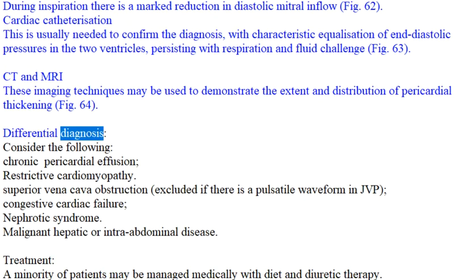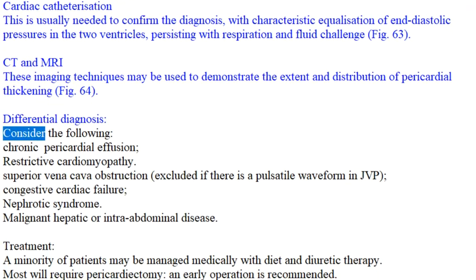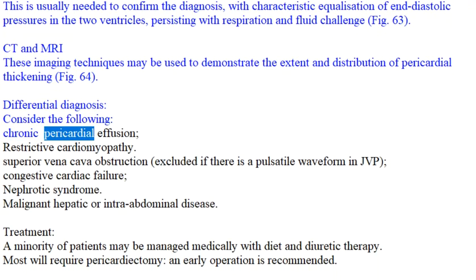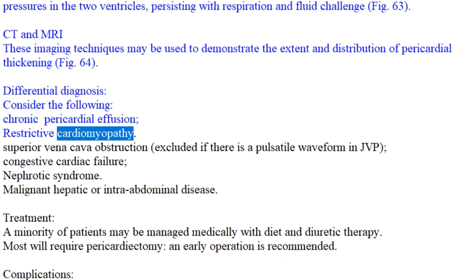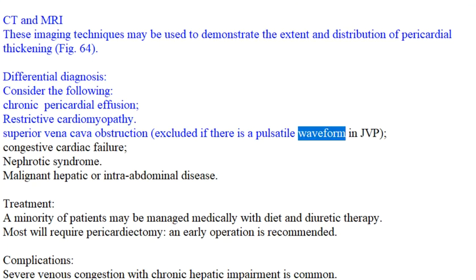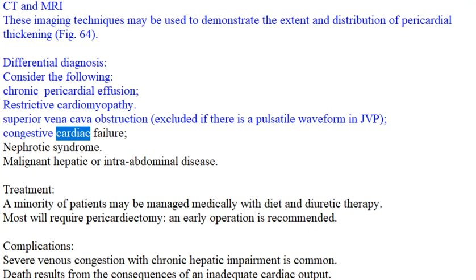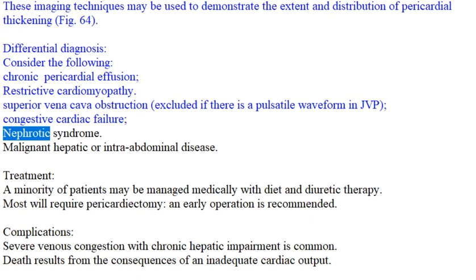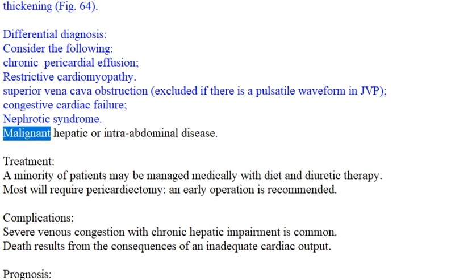Differential diagnosis — Consider the following: chronic pericardial effusion, restrictive cardiomyopathy, superior vena cava obstruction (excluded if there is a pulsatile waveform in JVP), congestive cardiac failure, nephrotic syndrome, and malignant hepatic or intra-abdominal disease.